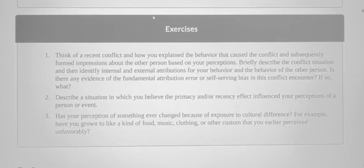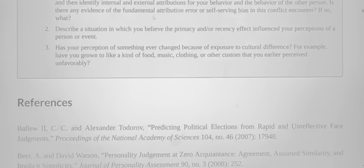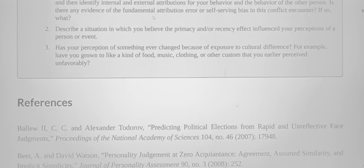Exercises: 1. Think of a recent conflict and how you explain the behavior that caused the conflict and subsequently formed impressions about the other person based on your perceptions. Briefly describe the conflict situation and then identify internal and external attributions for your behavior and the behavior of the other person. Is there any evidence of the fundamental attribution error or self-serving bias in this conflict encounter? 2. Describe a situation in which you believe the primacy and/or recency effect influenced your perceptions of a person or event. 3. Has your perception of something ever changed because of exposure to cultural difference? For example, have you grown to like a kind of food, music, clothing, or other custom that you earlier perceived unfavorably?